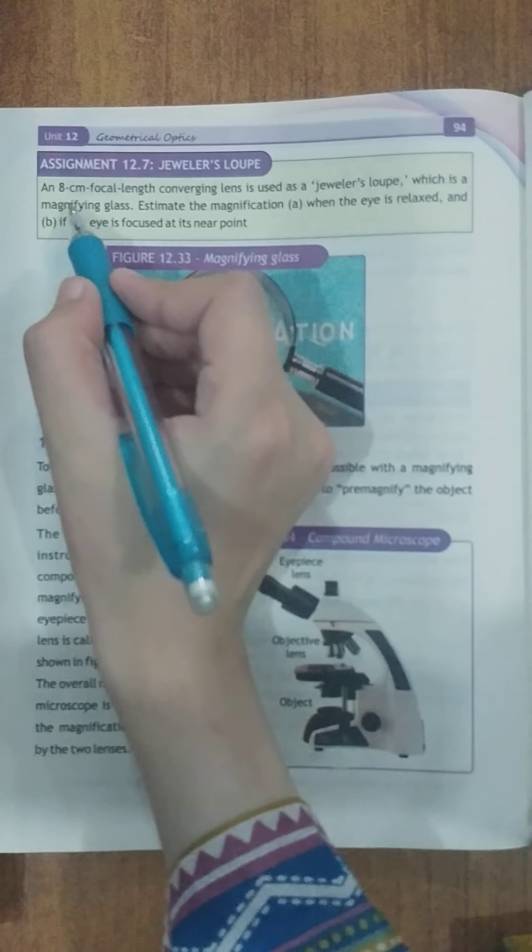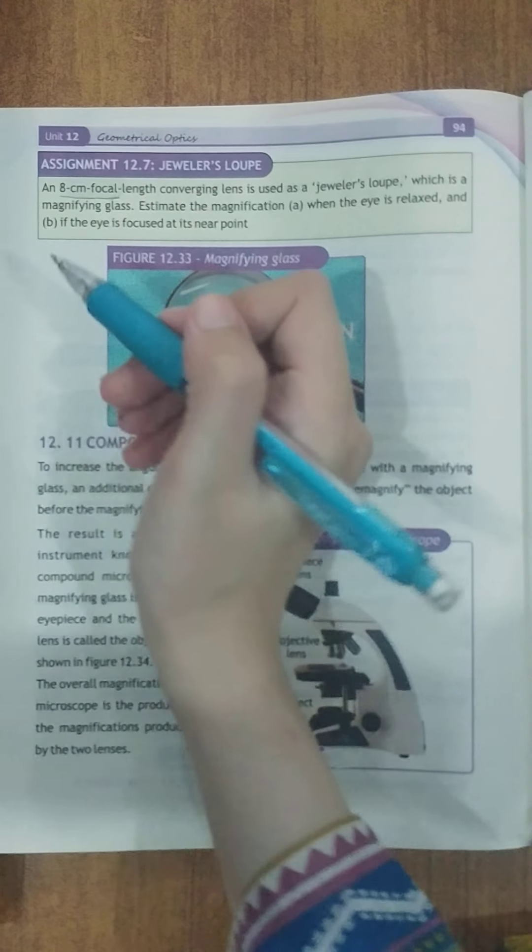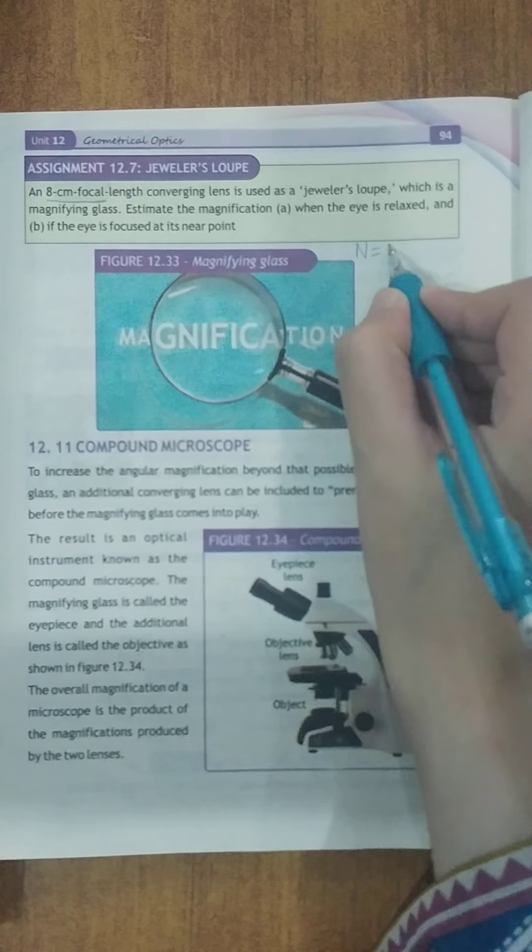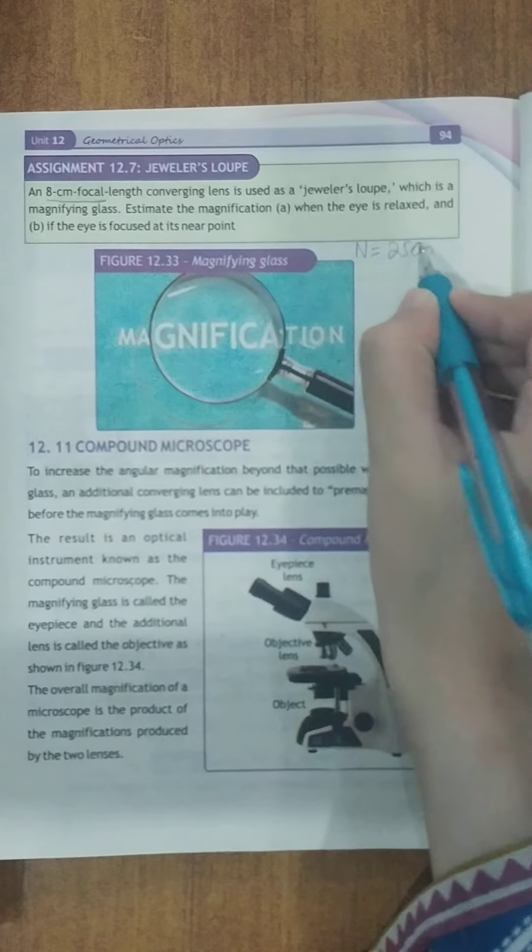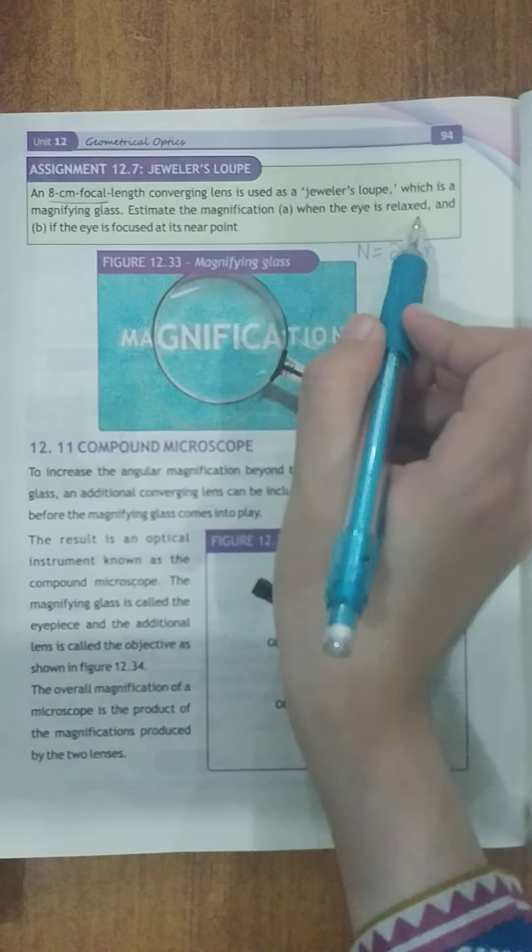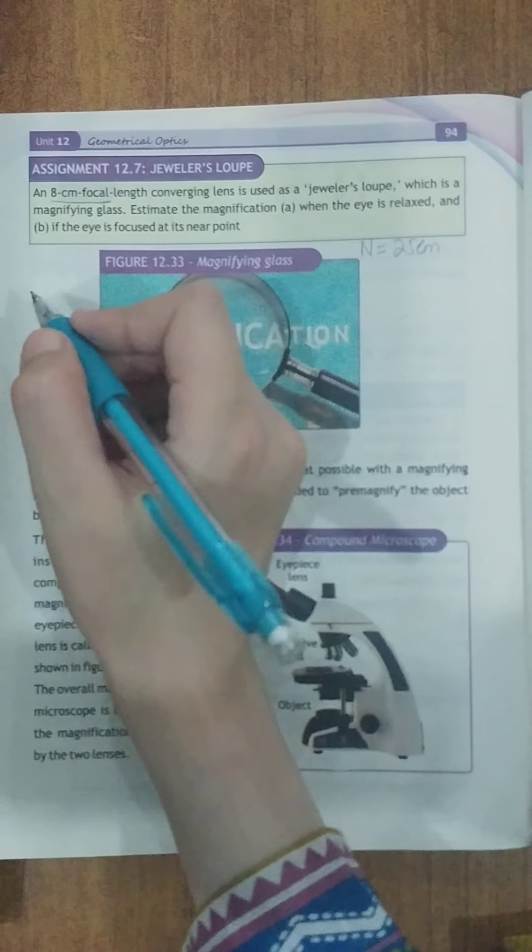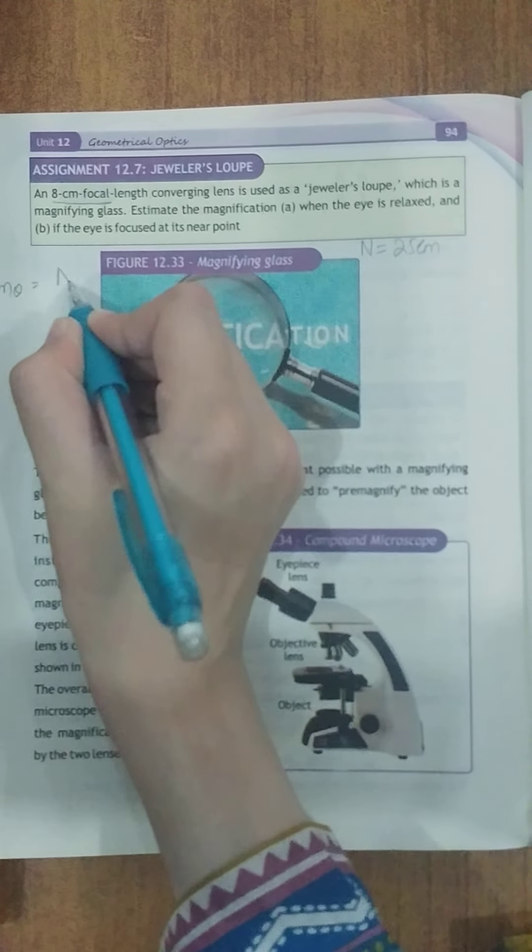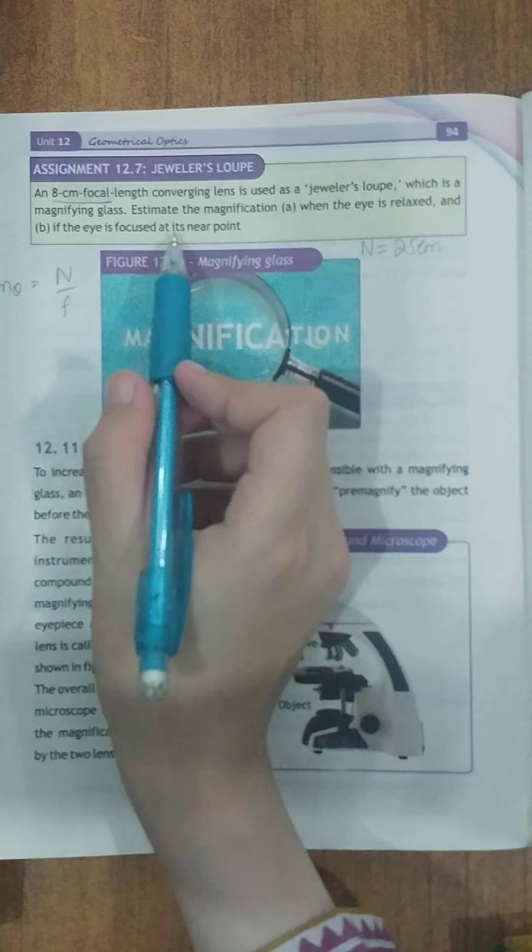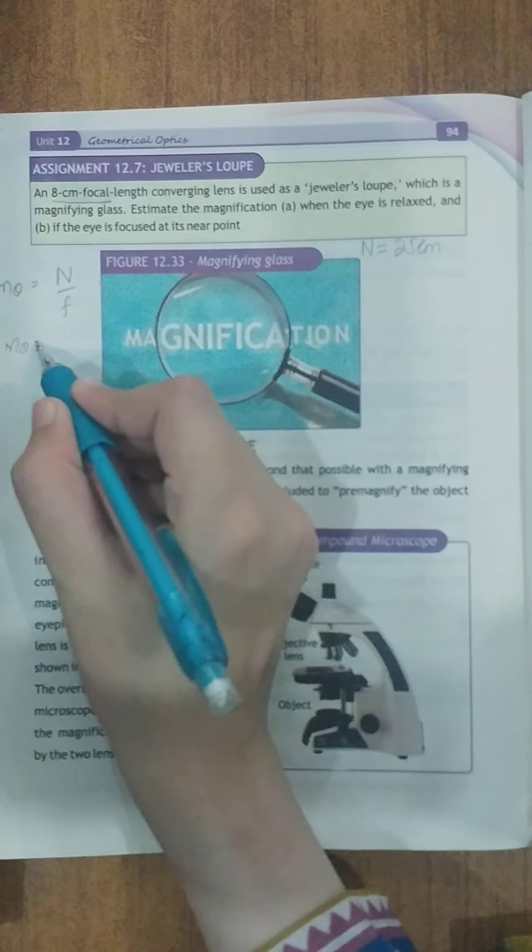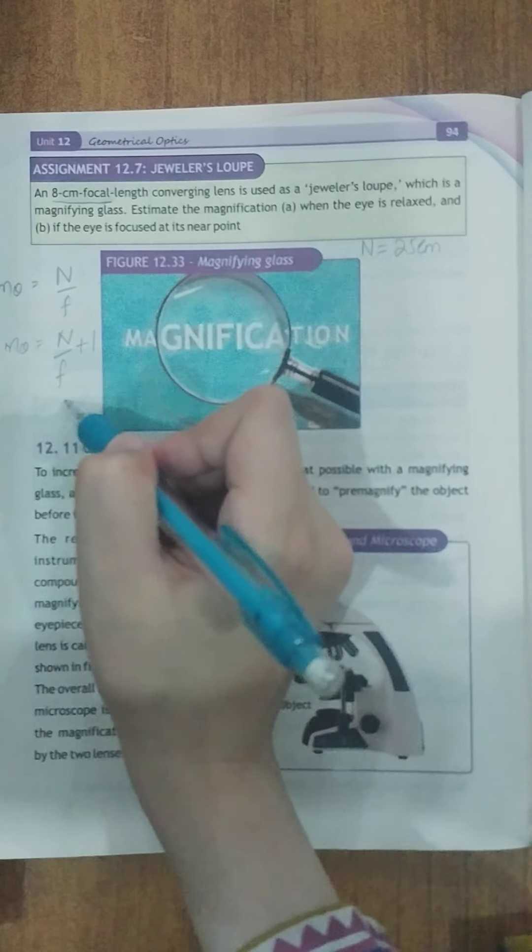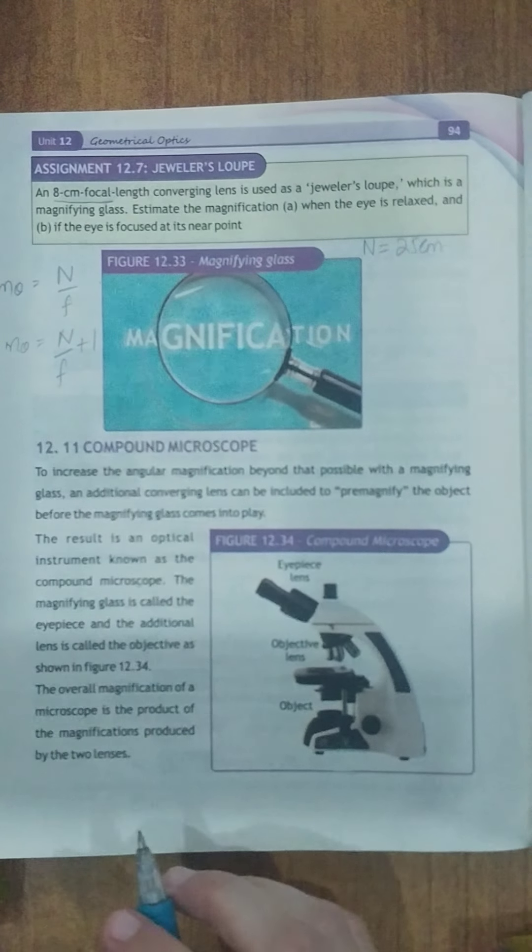Aapko focal length diya gaya hai. Aapke paas jo near point ka distance hum le rahte hain jo n ki value thi vo aap generally 25 cm aapko yaad hona chahiye. Jab eye is relaxed to relaxed ka matlab hai ke far images ke liye ye baat kar rahe hain to aap m theta ke liye formula use karenge n over f ismein values ko put karenge. Second case if the eye is focused at its near point to aap m theta ke liye formula put karenge n by f plus 1. In dono mein values put karen dekhen ke aapke paas kya aata hai.